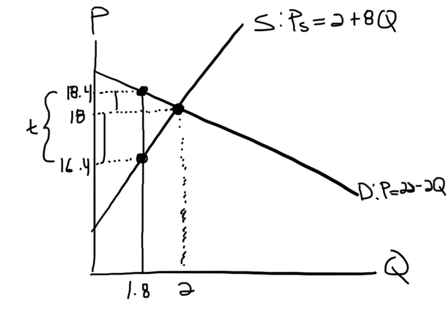So the steeper the curve is, the more inelastic that side of the market is. The slope of this curve, the supply curve, is given by this number is 8, and the slope of the demand curve is actually 2.